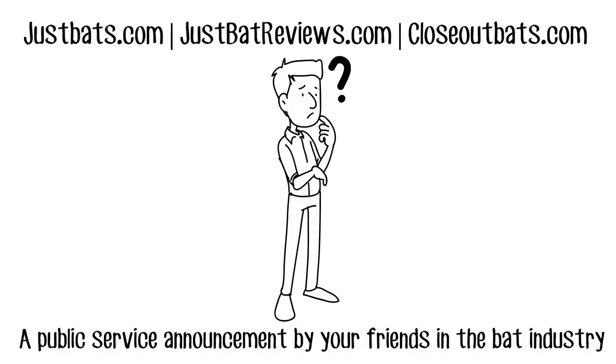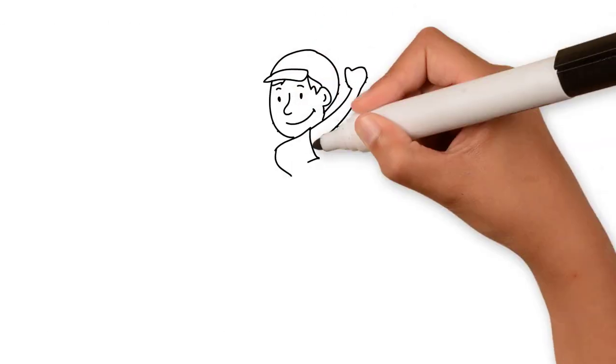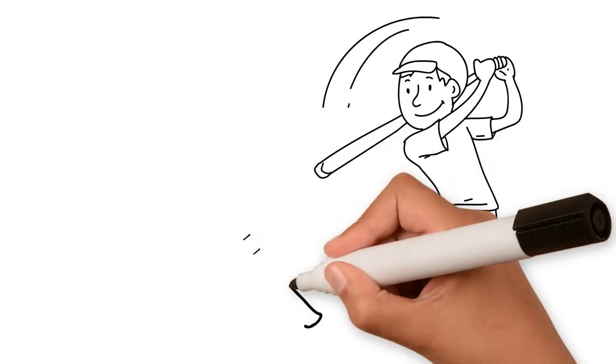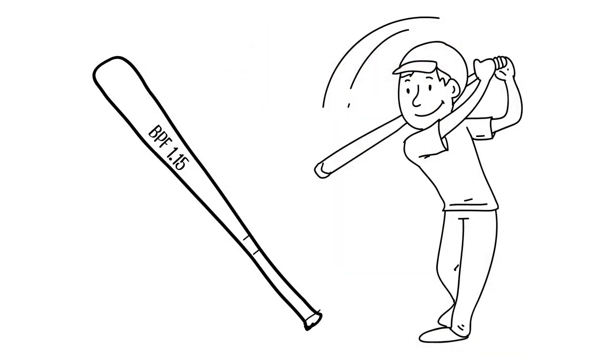Will the new USA bat standard affect Timmy? Meet Timmy. He's 11. In 2017, Timmy used a two and one quarter bat that read BPF 1.15 on the side. He plays in a Cal Ripken league.